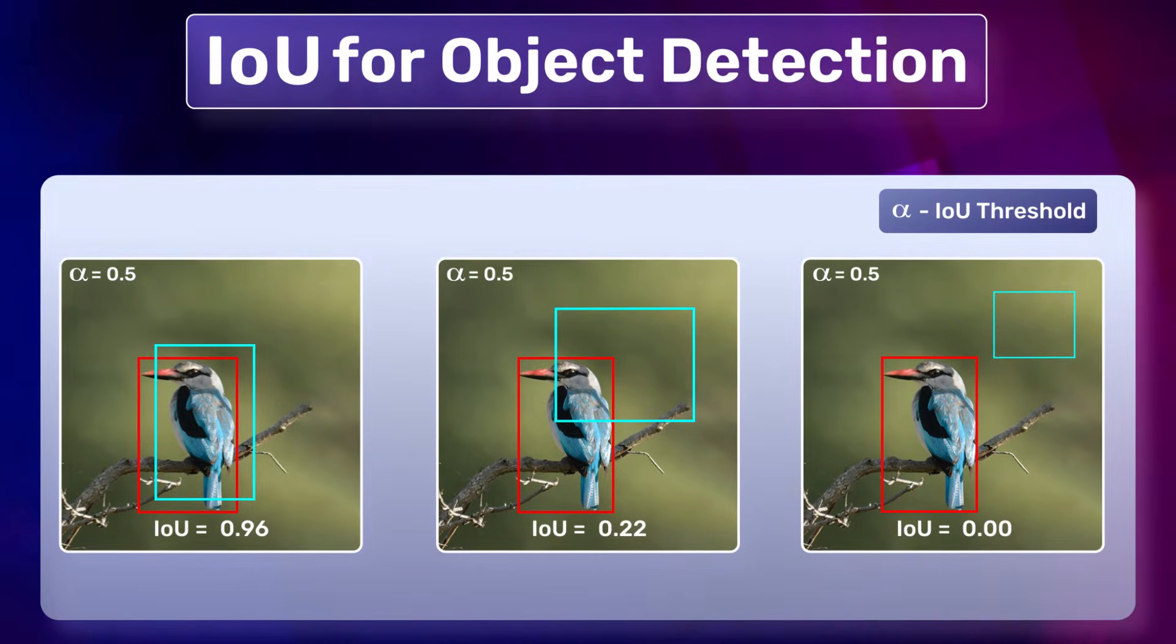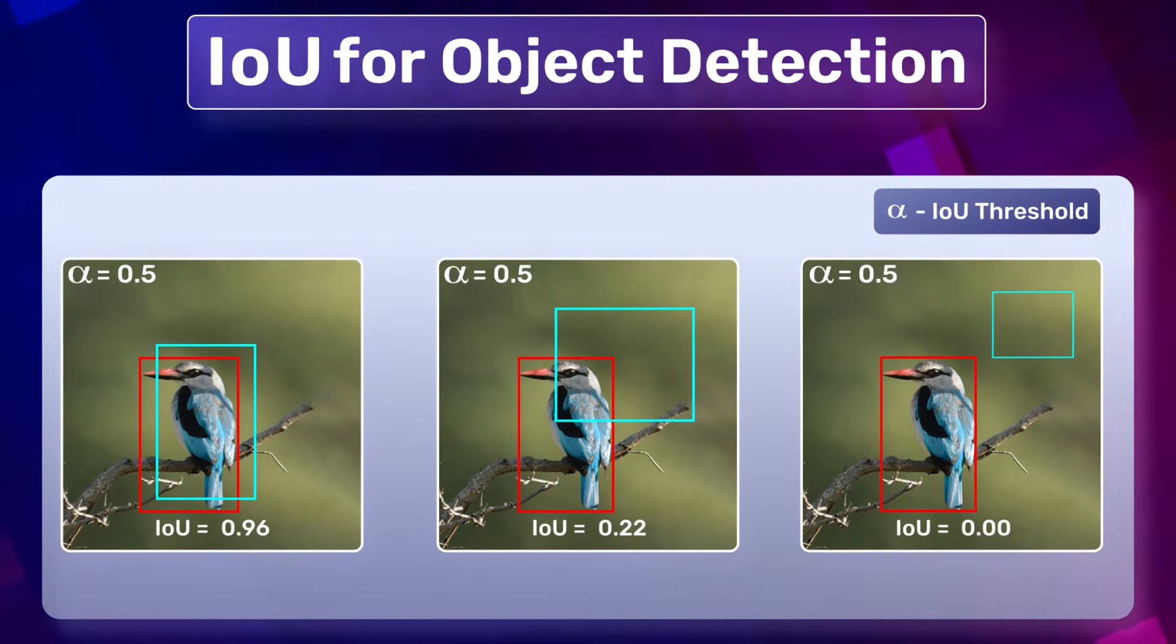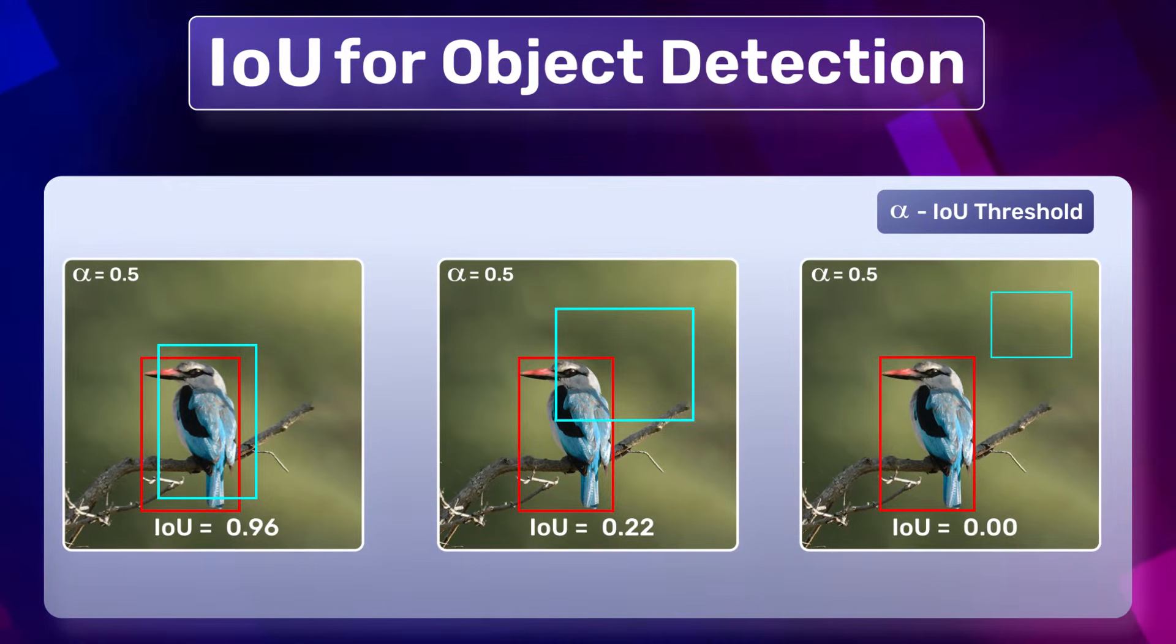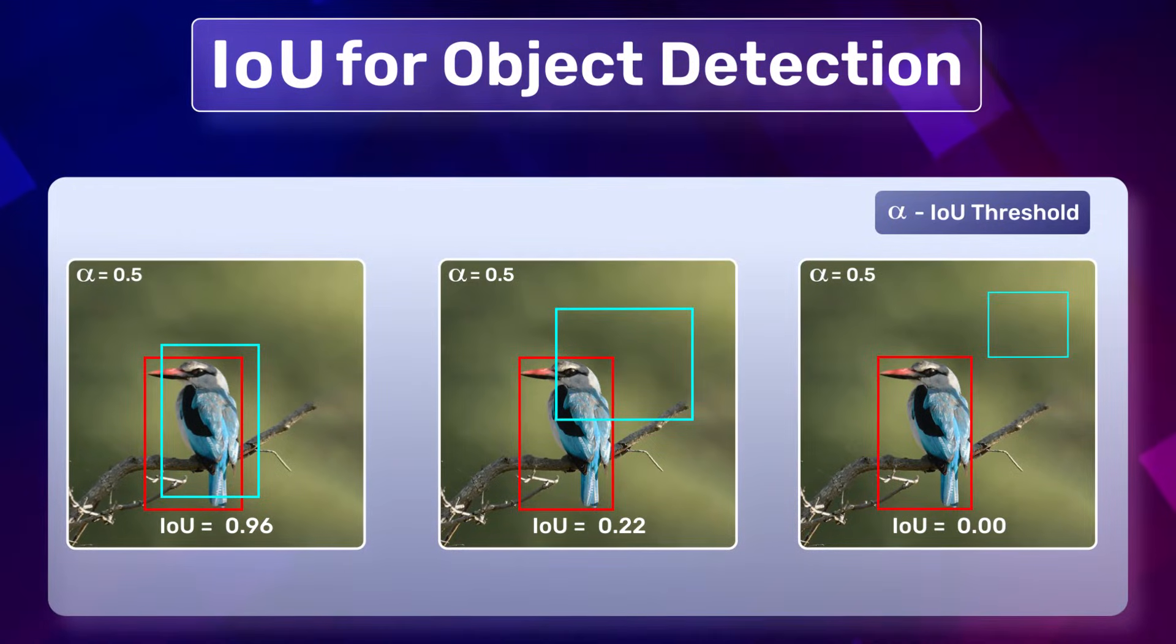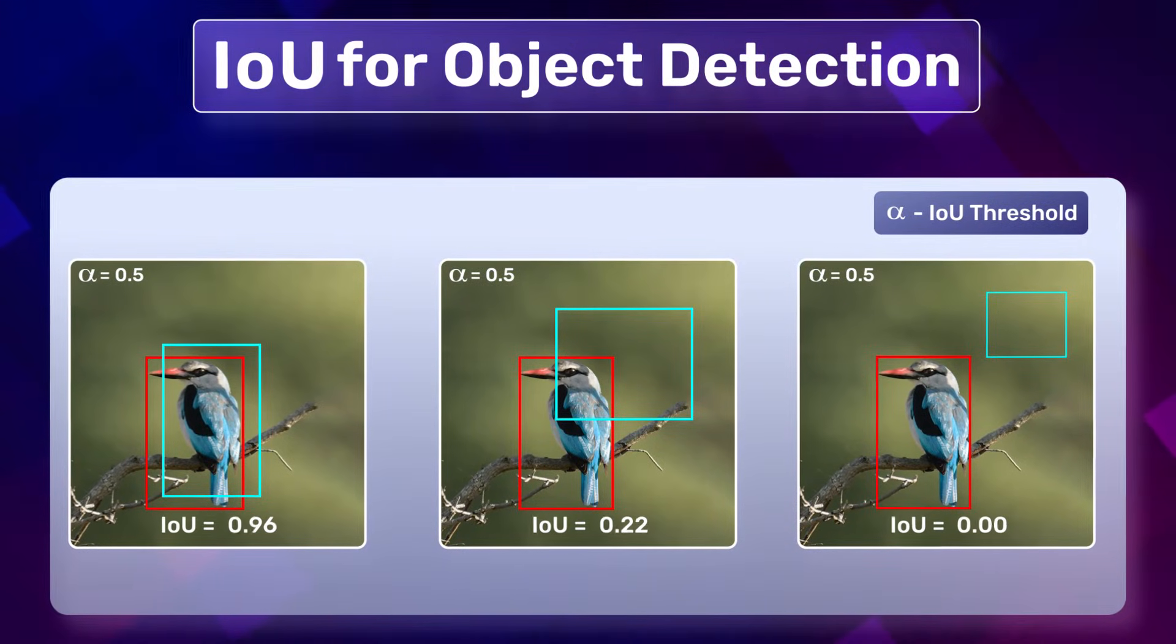There are two main parameters: the IoU threshold represented by alpha, and the IoU value calculated individually for each prediction. Now we will compare the IoU threshold with the IoU values.